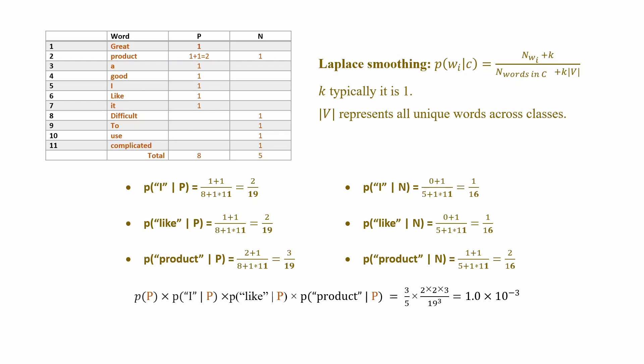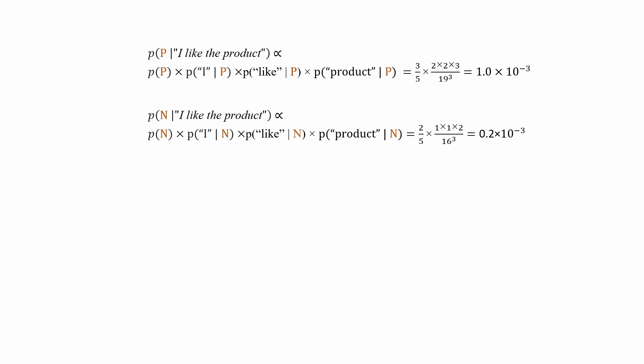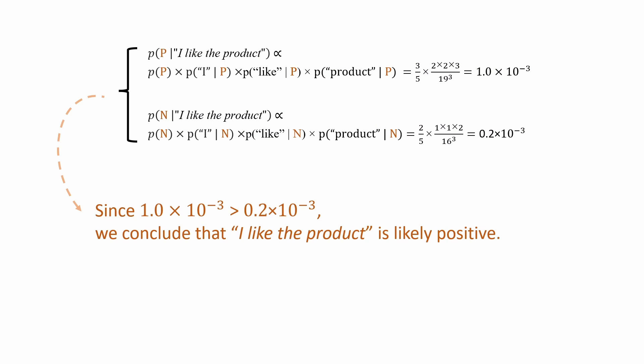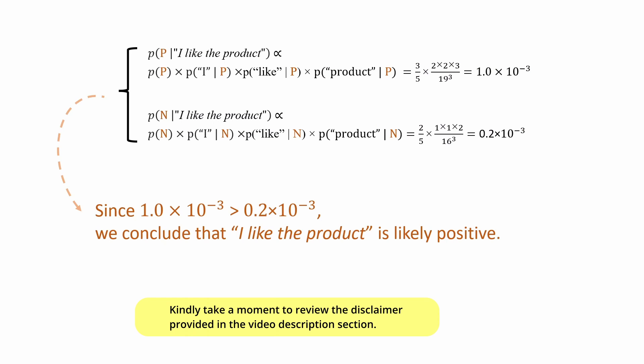Based on the formula — prior times likelihood — we calculate the posterior for both politics and negative. We compute two numbers, and as you can see, the politics sentiment probability is greater than the negative. Therefore, we conclude that 'I like the product' is likely positive. Thank you for watching — if you have any questions, feel free to comment below and I'll do my best to answer.